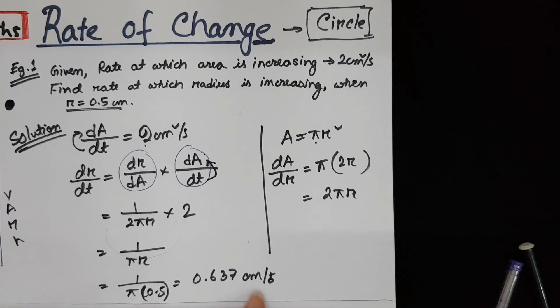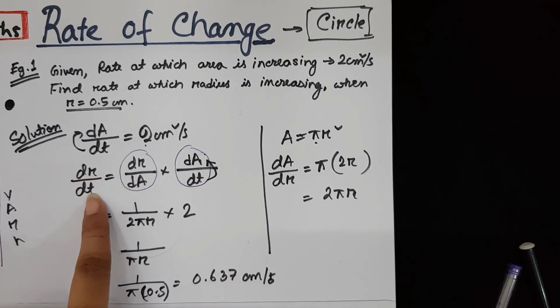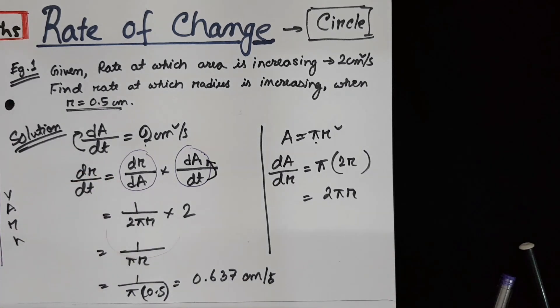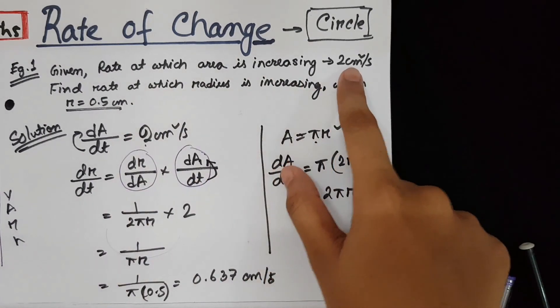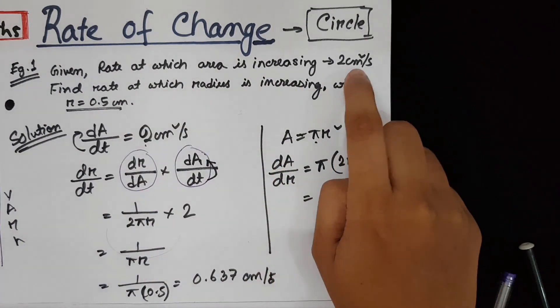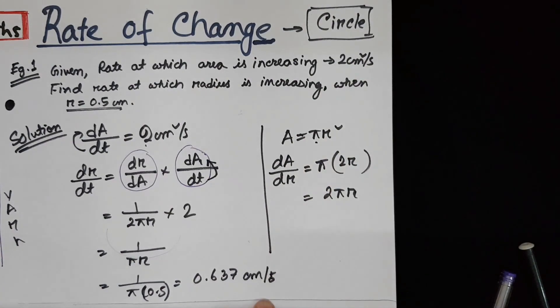And for the unit, since it is dr/dt, so you need centimeter here. But if you're going to find dV/dt, use centimeter cube per second. It's not fixed that it has to be centimeter. Since the area was given in centimeter, I'm using centimeter. If they had given meter square per second, I would have used meter per second.